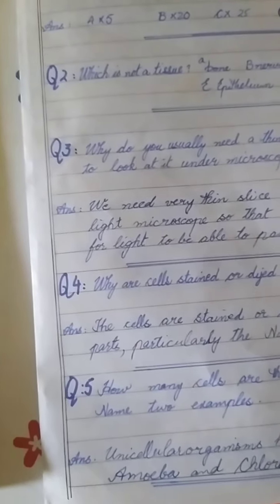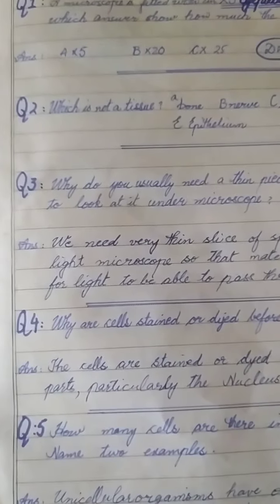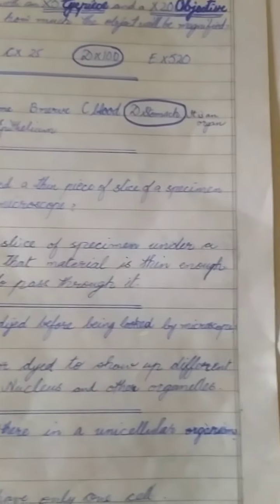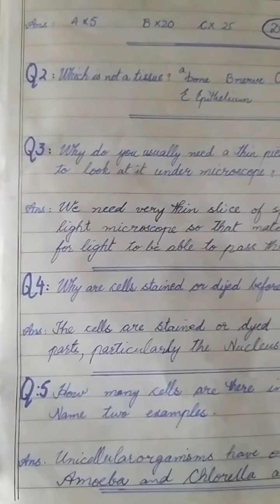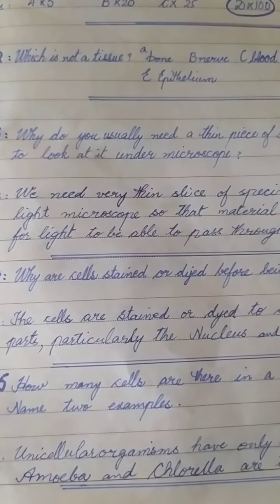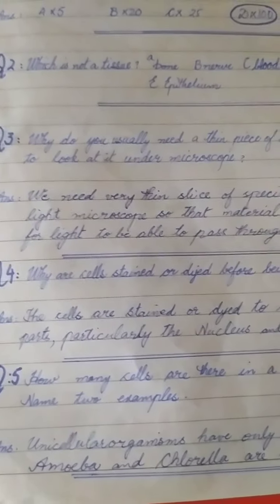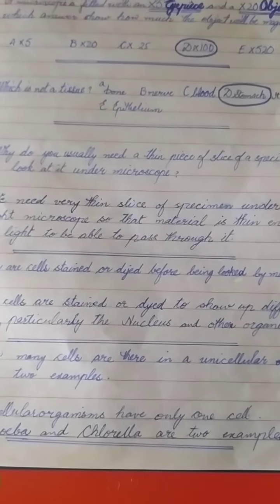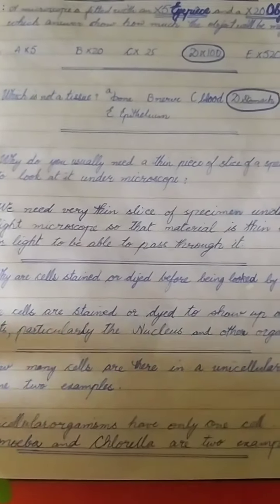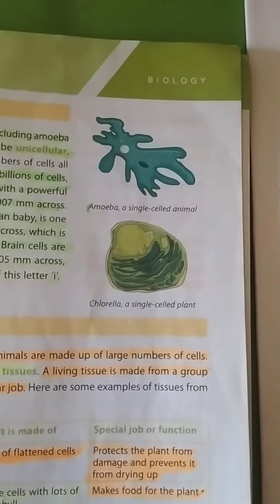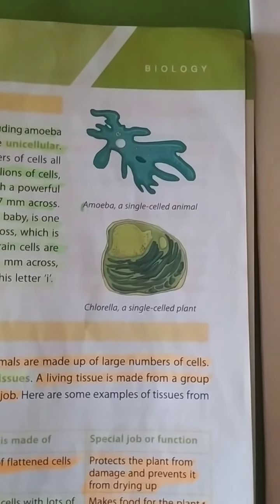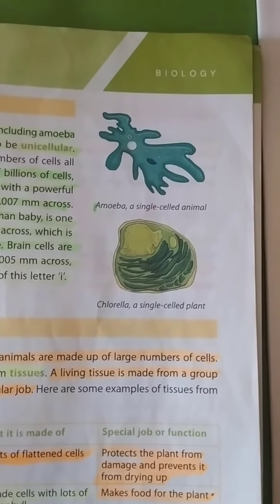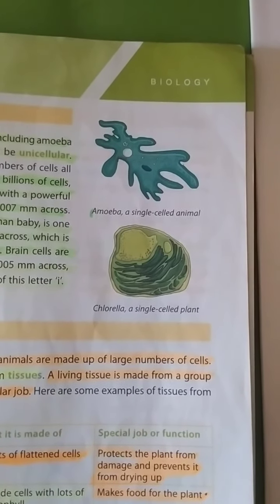Question number five: how many cells are in a unicellular organism? Give two examples. Uni means one — any living thing that has only one cell is a unicellular organism. Examples include amoeba and cholera. You can see these single-celled animals in your book at page number five.